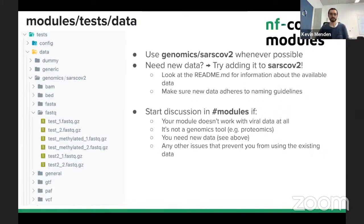For any other cases - for example, if you cannot use viral data, need other data that's not available, have a proteomics tool that's not implemented yet, or any other issue with the test data - the best option is to start a discussion in the modules channel in Slack. You really want to try to minimize the test data set and reuse the data as much as possible.